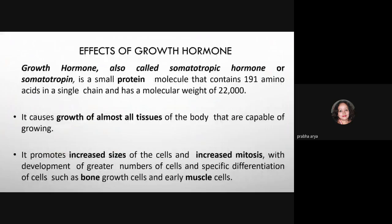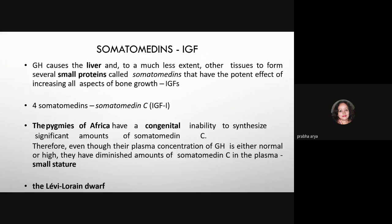Growth hormone, also called somatotropic hormone or somatotropin, is a small protein molecule containing 191 amino acids with a molecular weight of approximately 22,000. It causes growth of almost all tissues of the body capable of growing, promoting increased cell size and increased mitosis so cells divide faster and increase in mass. It also causes differentiation of cells such as muscle cells and bone cells, increasing their number.